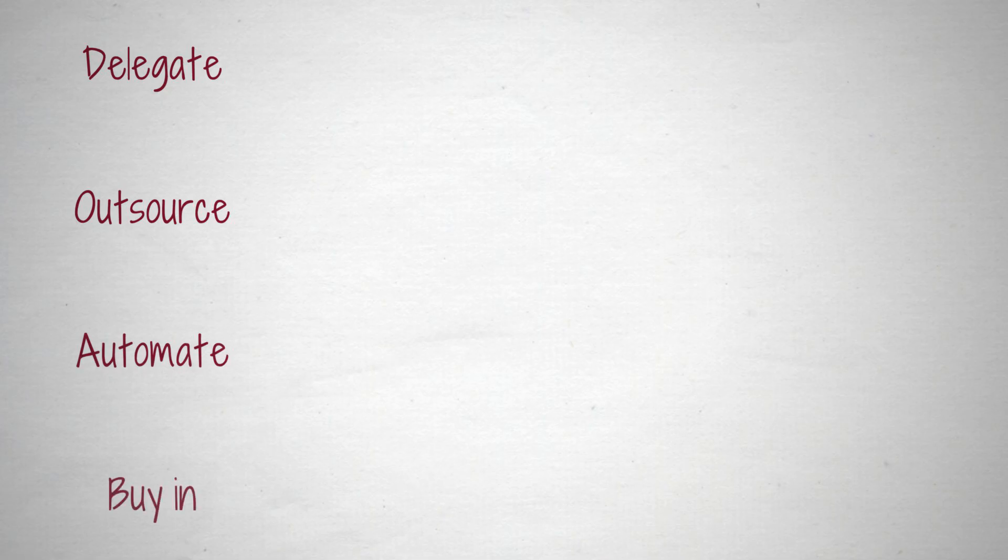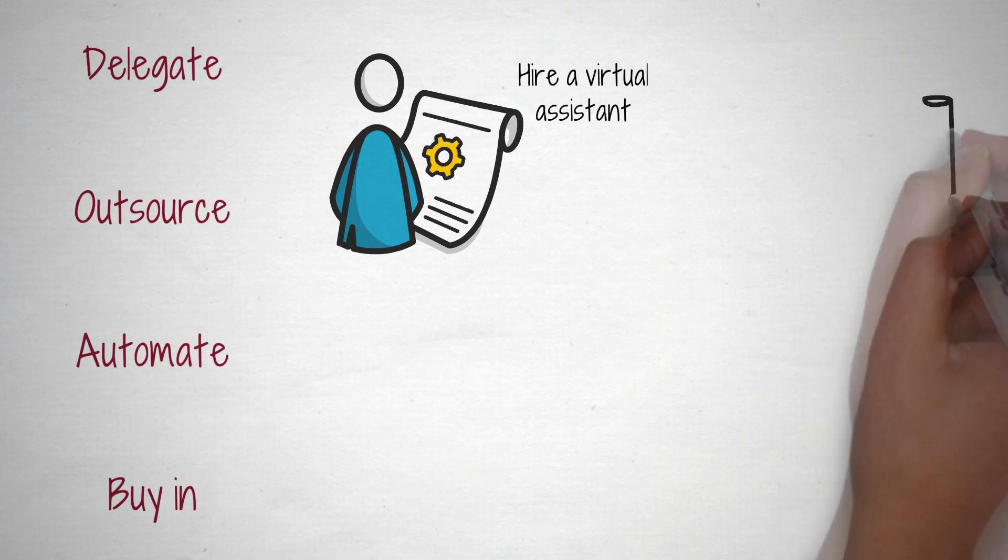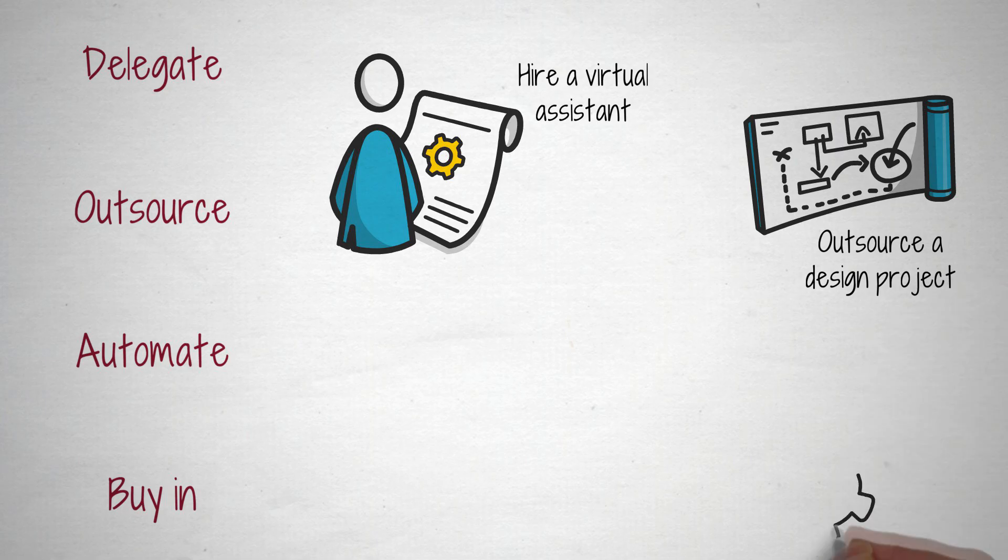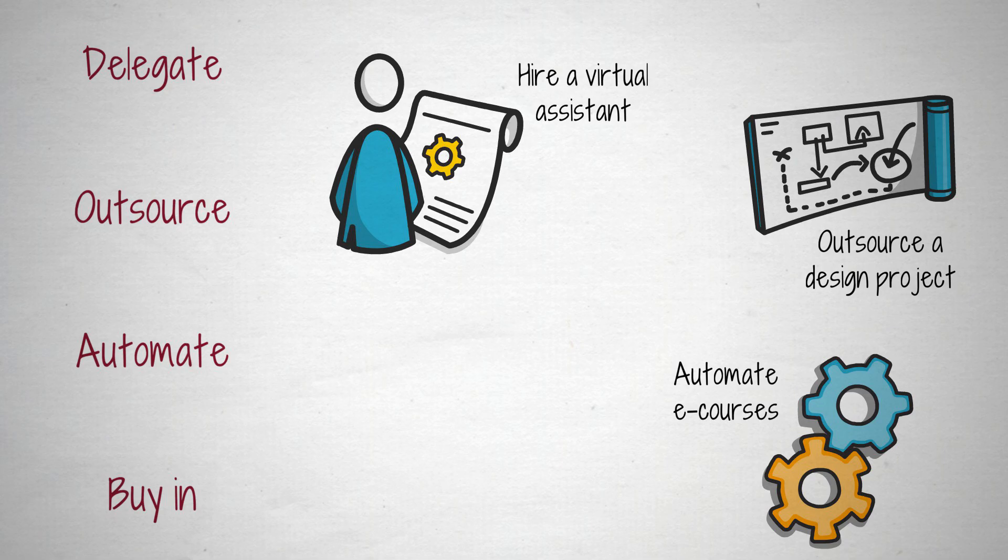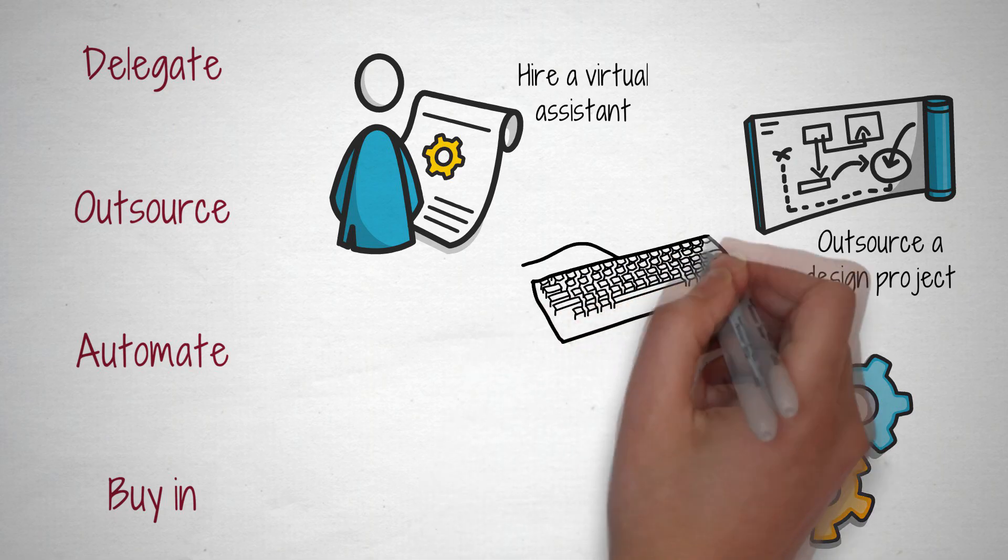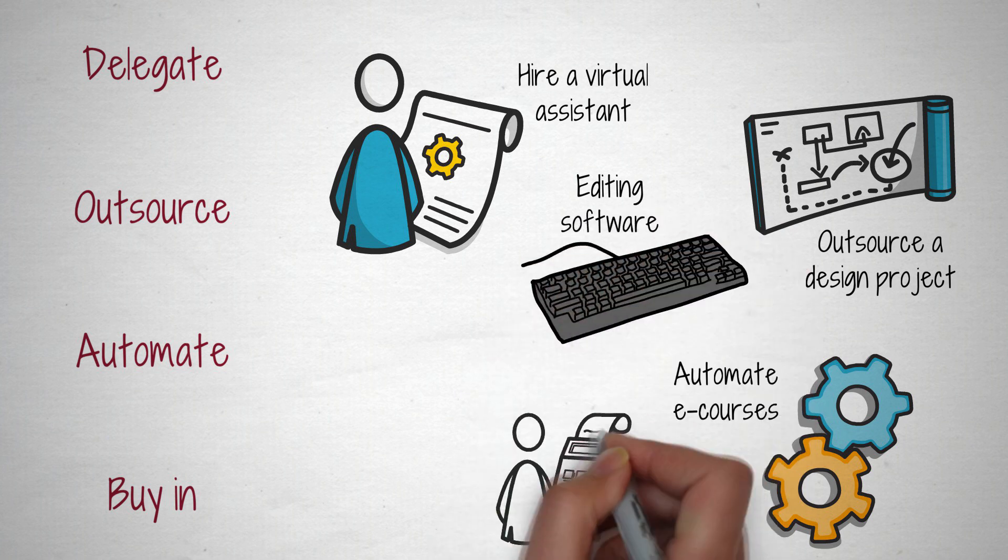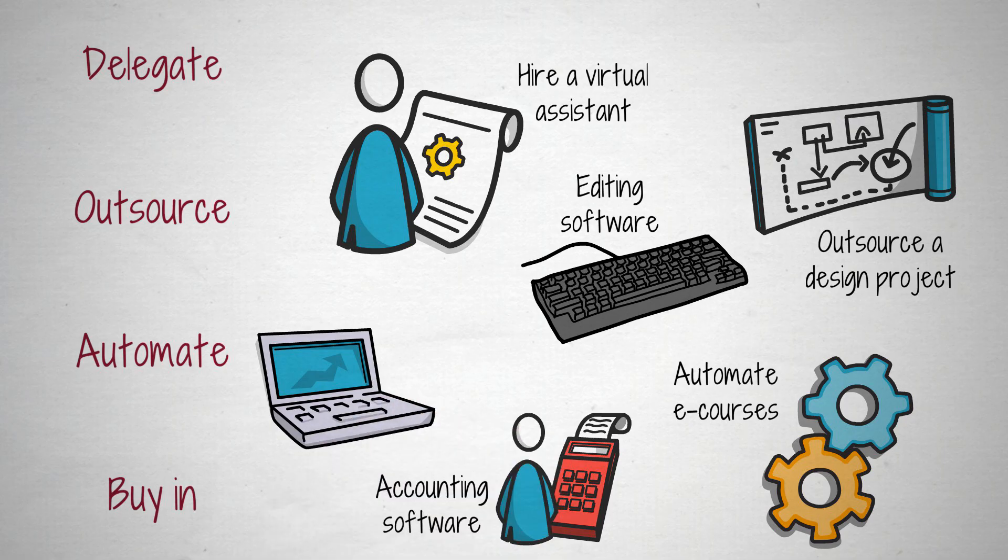Productive people aren't afraid to delegate, outsource, automate, or buy in. They hire a virtual assistant to do their admin tasks. They outsource a design project or some editing work. They automate their e-courses using auto-responder software, or their social media sharing using online tools like Hootsuite or RecurPost. They use editing software like Grammarly to check their written work. They use accounting software like QuickBooks to save hours of time on monthly invoicing. They buy in PLR content rather than creating everything from scratch for their content marketing activities.